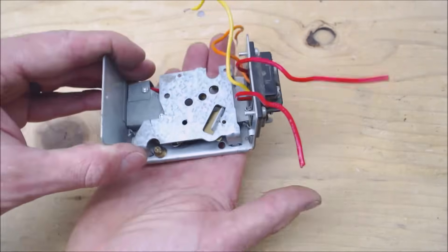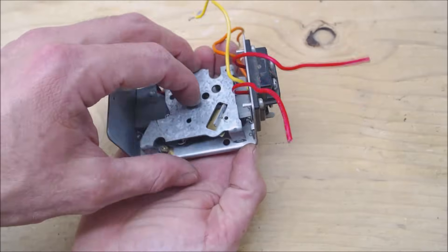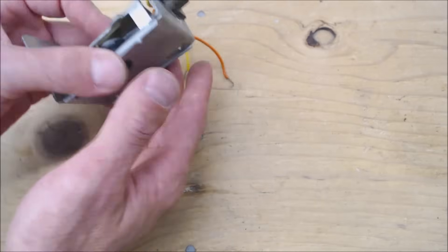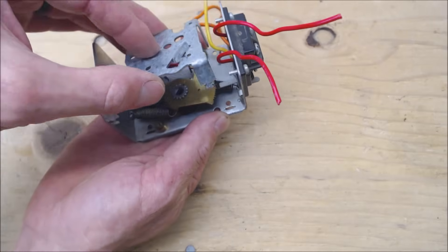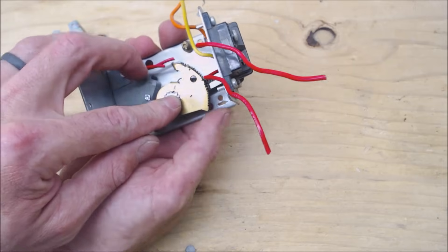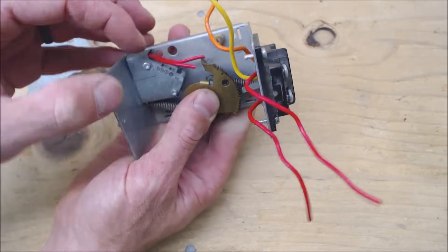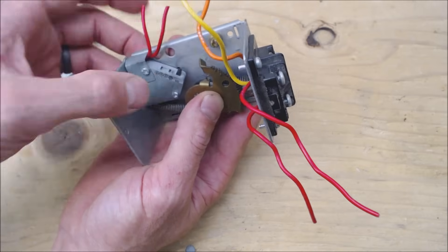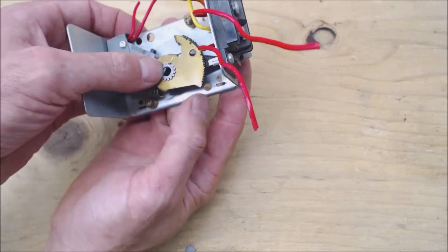Then in reference to this part right here you can actually remove this assembly if you just turn this tab, this tab and this tab which I've already done and there's your gears and spring assembly. Right here you have your little micro switch and that's that.